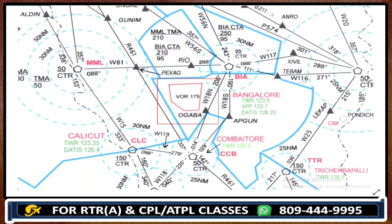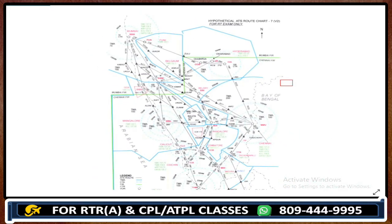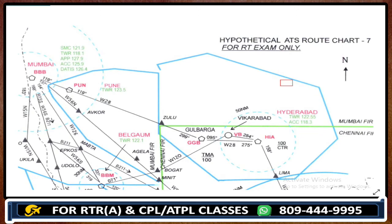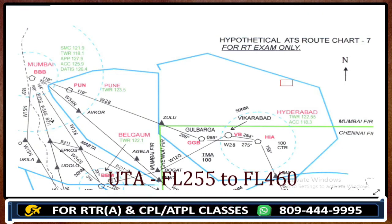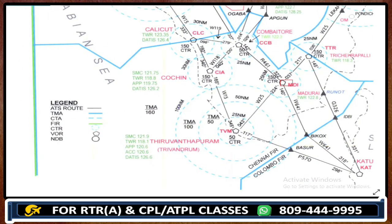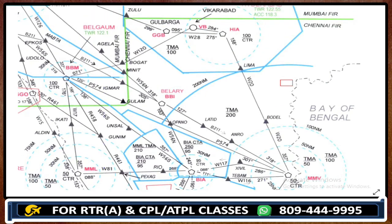One more thing I would like to tell you about this chart. This is chart number seven, where UTA — upper area control limit — is applicable. It is not written in this chart, but I'm telling you: on this particular chart, UTA, upper area control limit, is from flight level 255 to flight level 460.